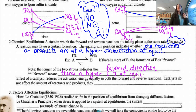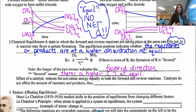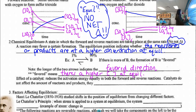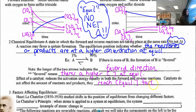The effect of a catalyst: a catalyst doesn't affect equilibrium. All it does is get you there faster — it does not affect the amount of reactants and products. Equilibrium concentrations are reached sooner. It just decreases the time it takes.